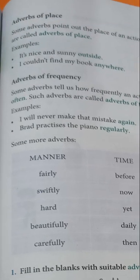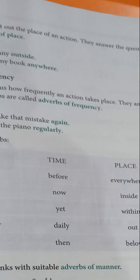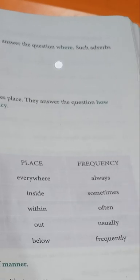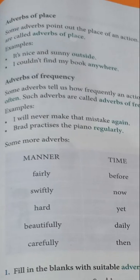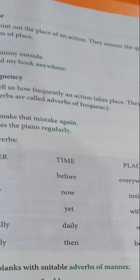Adverbs of place. Some adverbs point out the place of an action. They answer the question 'where?' Such adverbs are called adverbs of place. Examples: 'It's nice and sunny outside.' 'I couldn't find my book anywhere.' So to summarize: how → adverbs of manner; when → adverbs of time; where → adverbs of place.